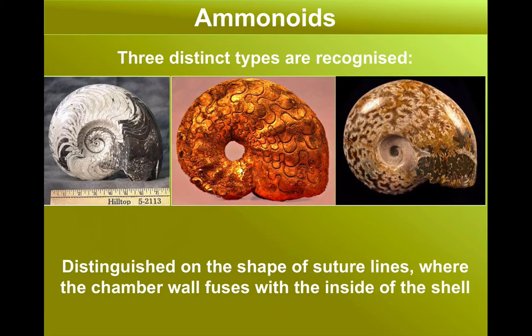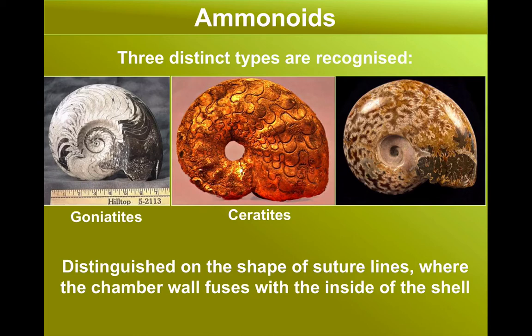When we look at the Ammonoid group, there are three distinct types. Each of these types is distinguished by the shape of its suture line, which changed over geological time. The earliest forms are the goniatites. These are followed by the ceratites. And the final group that evolved were the ammonites. For A-level, you need to be able to distinguish between these different groups.